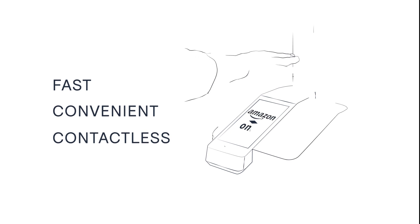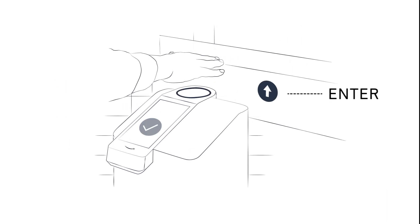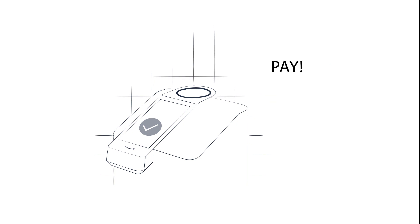Amazon One is a fast, convenient, contactless way for customers to identify, enter, and pay in any physical environment.